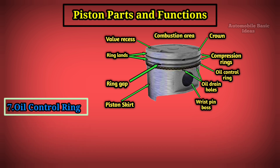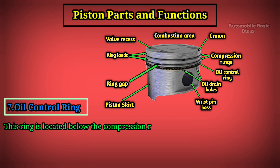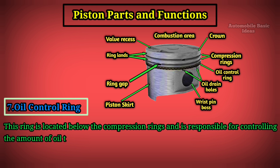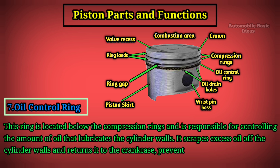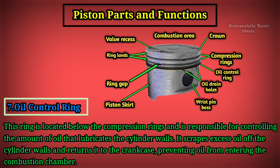Oil Control Ring: This ring is located below the compression rings and is responsible for controlling the amount of oil that lubricates the cylinder walls. It scrapes excess oil off the cylinder walls and returns it to the crankcase, preventing oil from entering the combustion chamber.